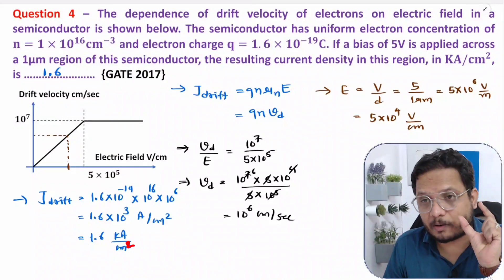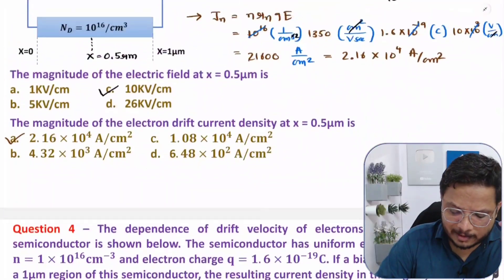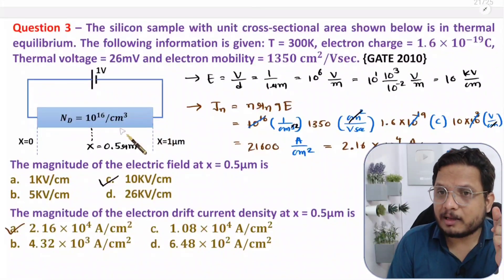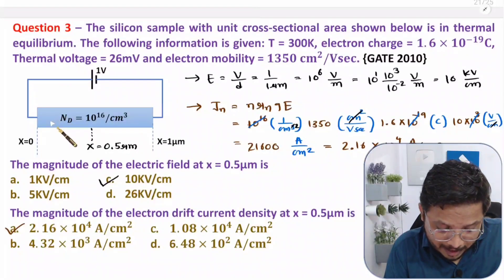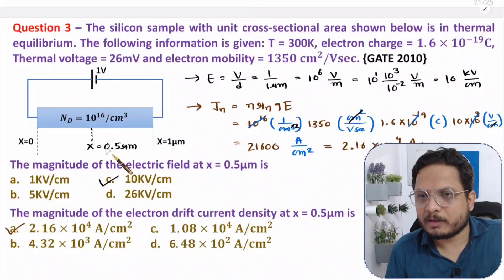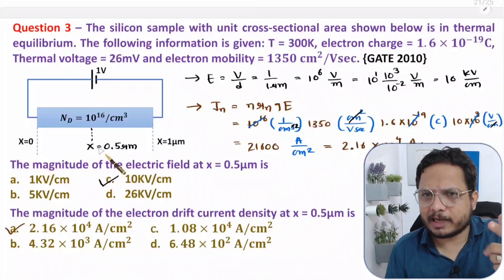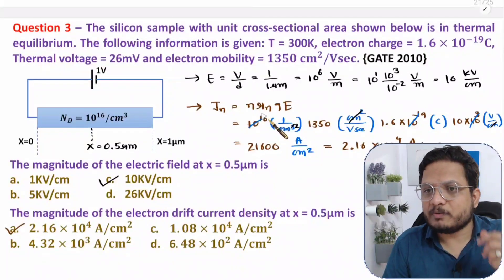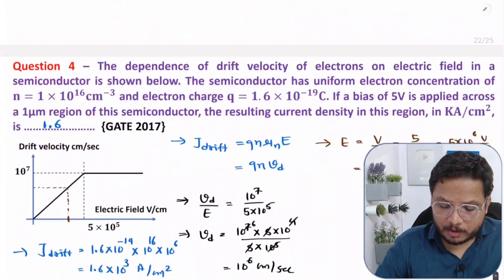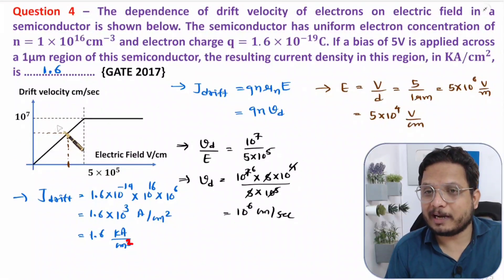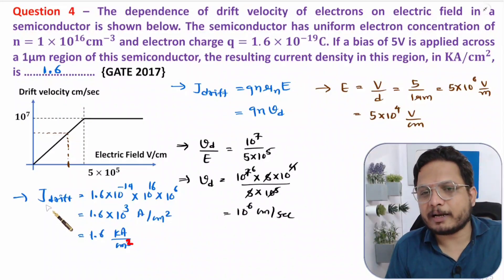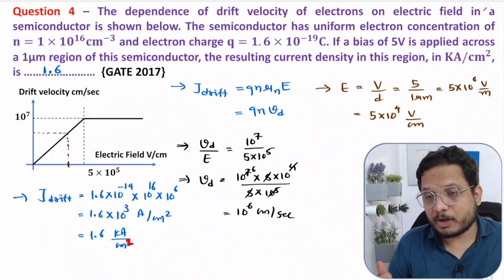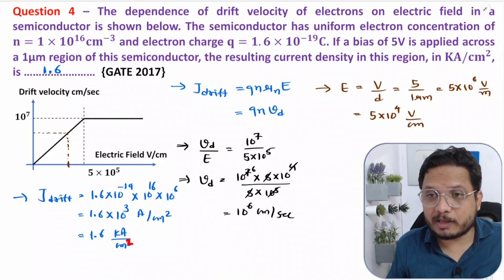To summarize the key takeaways: understand the basic formulas and how to use them. Across a bar, the electric field is always uniform - even if extra positional data like x = 0.5 is given, the field is simply voltage divided by distance. When a graph is given, use the slope to extract drift velocity and substitute into the formula. If anything is unclear, please note it in the comments. Thank you for watching.